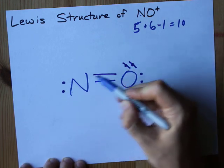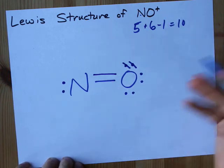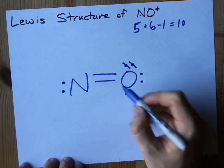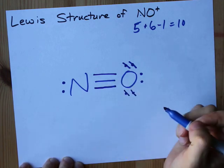This nitrogen now has 1, 2, 3, 4, 5, 6 electrons around it, but that's not enough either. Let's take 2 more electrons and push them so they're shared. That's a triple bond.